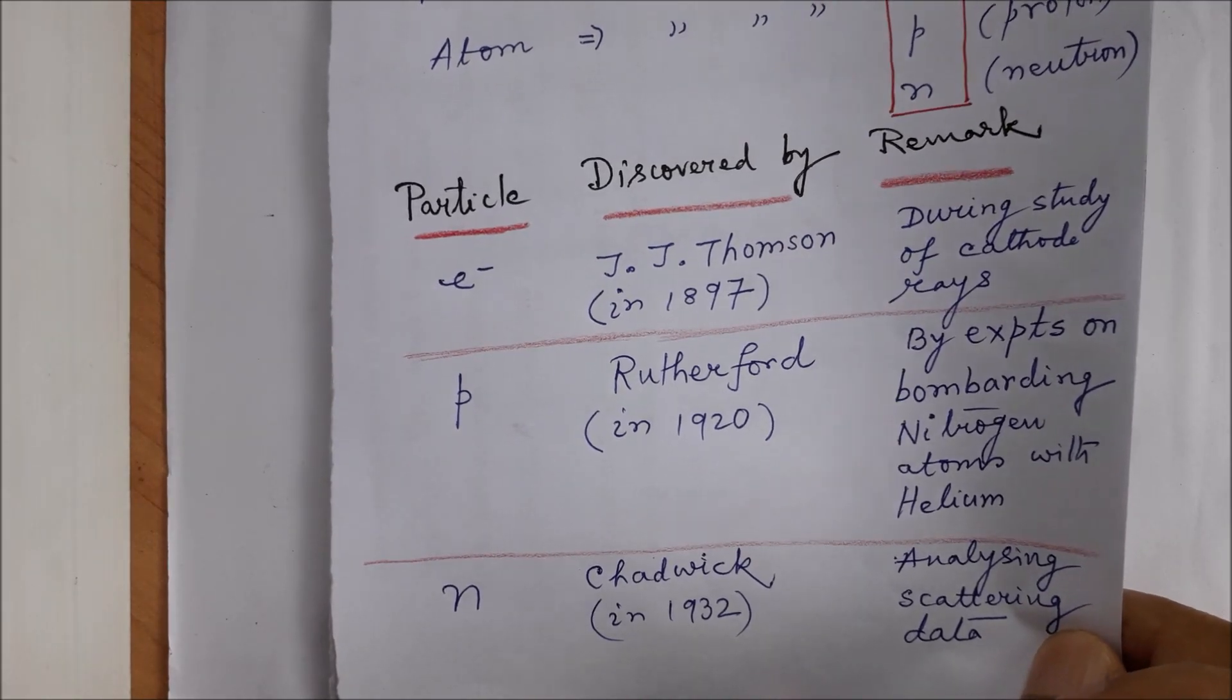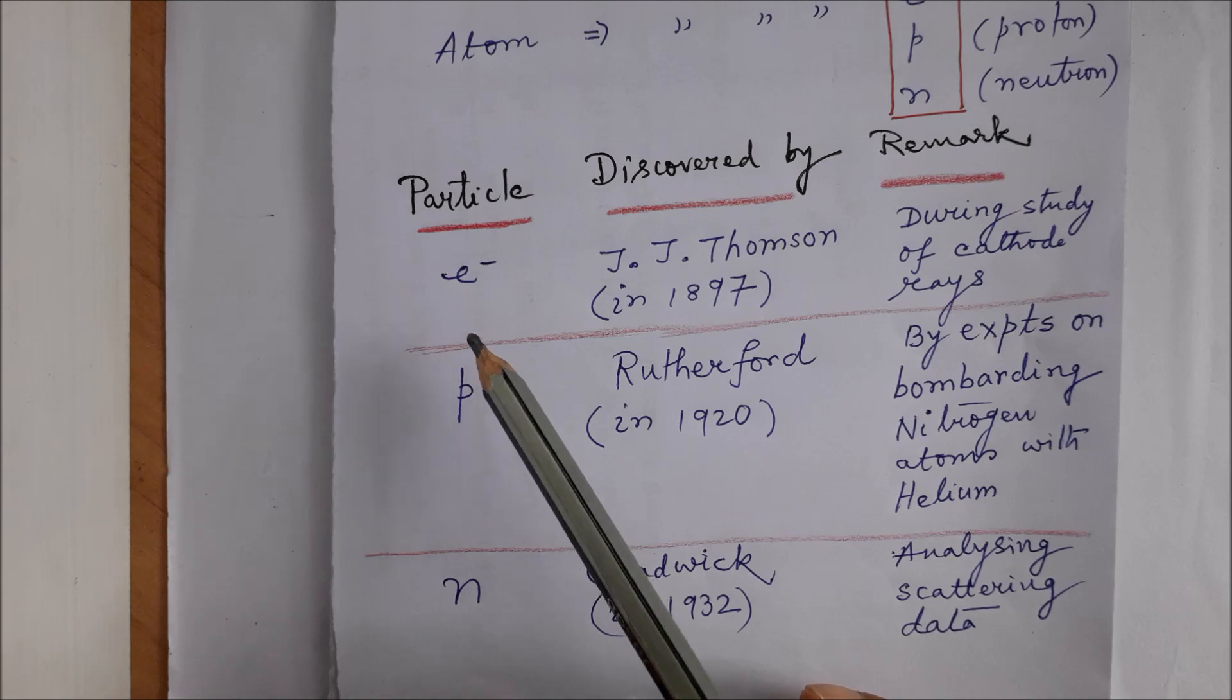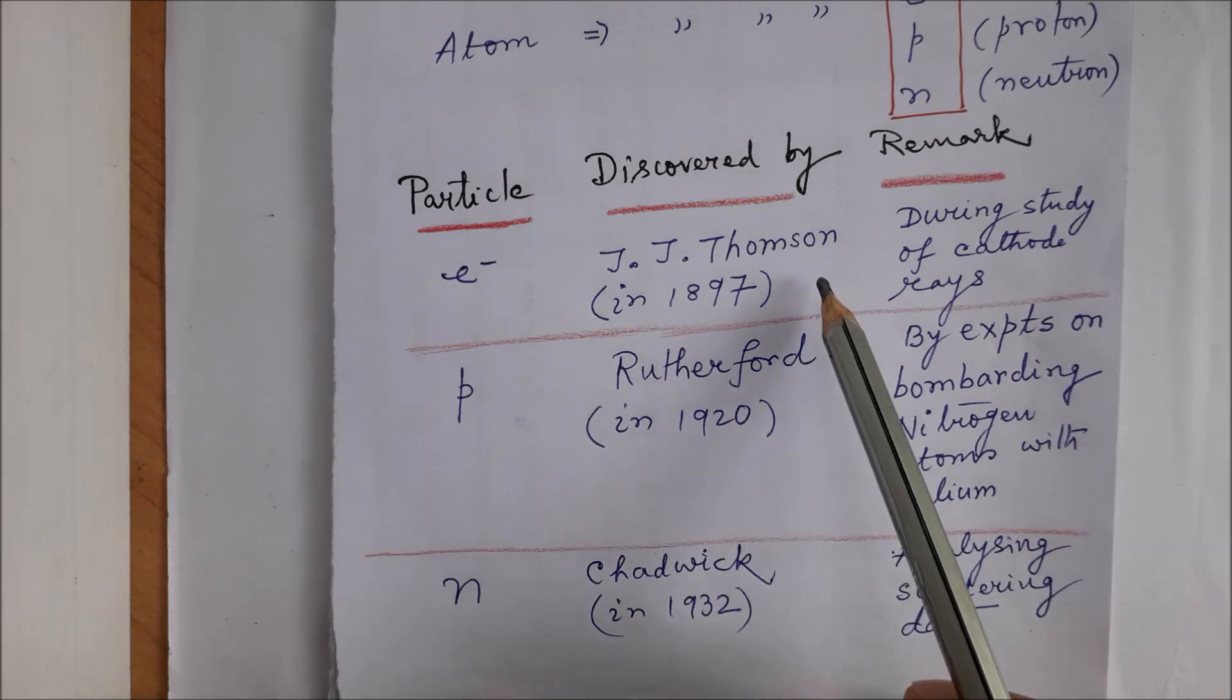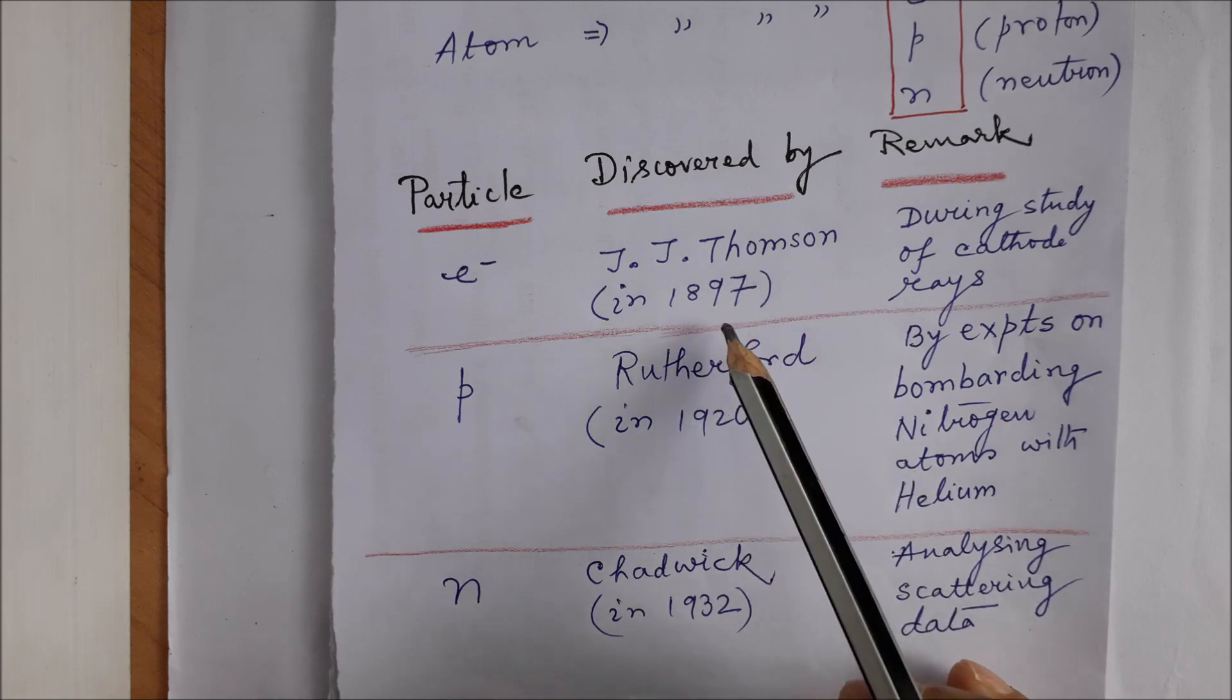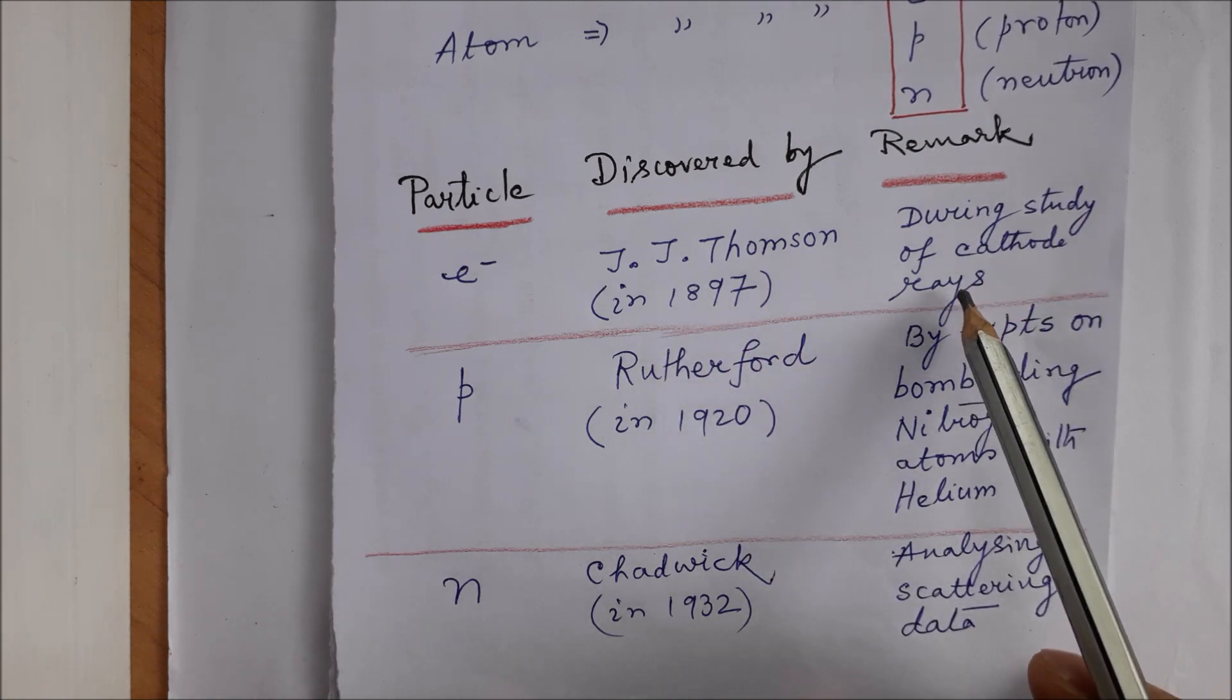Let me mention who discovered them at the very initial stage of this lecture. Electron was discovered by J.J. Thomson in 1897 during his study of cathode rays.